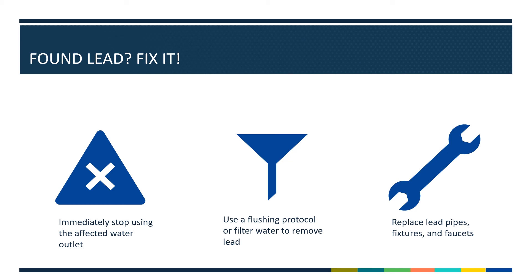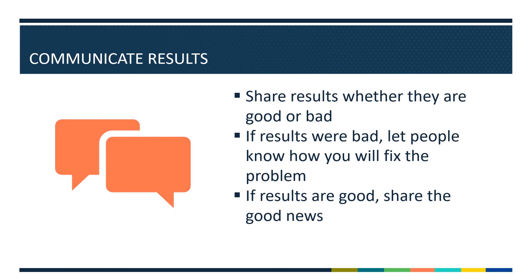When the problem has been fixed, be sure to communicate that to students, staff, and families so they know that the water is safe to drink. It is important to share the test results, whether they are good or bad, and explain what the results mean. This reinforces having a transparent process. If elevated levels of lead or other contaminants are found, let people know what will be done to fix the problem. If the results are good, share the good news and show families that you take their children's health seriously and promote the quality of the water at school.